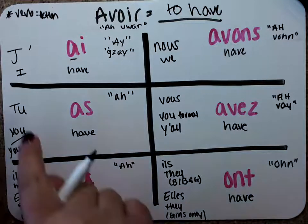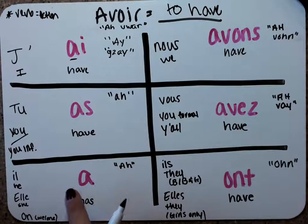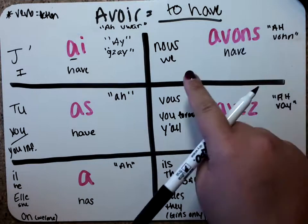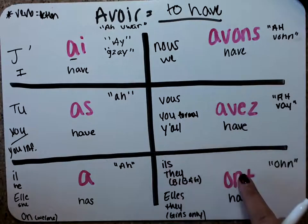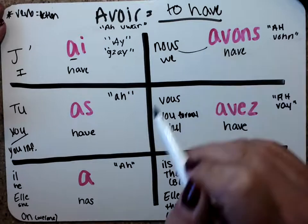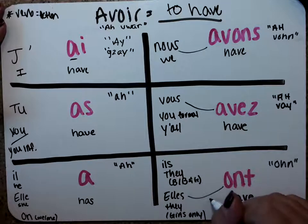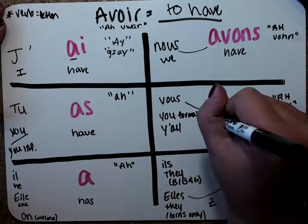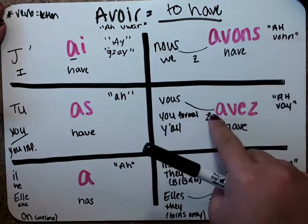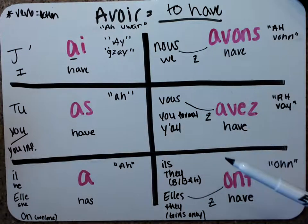Alright. So, so far we have j'ai, tu as, il a, elle a, on a, nous avons, vous avez, ils ont, elles ont. And so whenever we have an S with an A, it's going to make this link called a liaison, and it's going to make this Z sound. So I'm sure you heard me say it with nous avons, vous avez. All three of these on this side are going to have that little Z sound, that link.